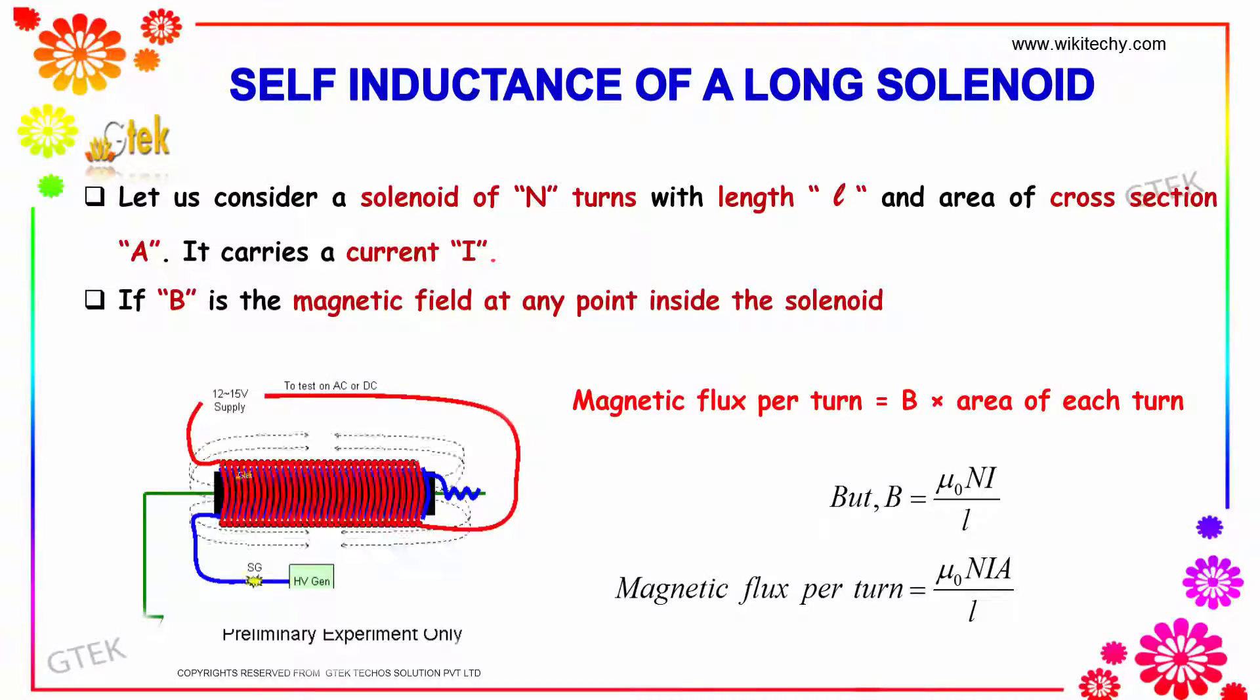Let's consider a solenoid of N turns with length L and area of cross-section A, carrying a current I.